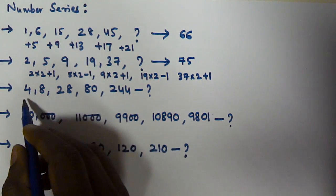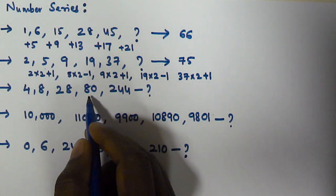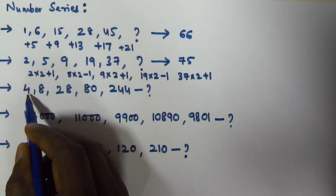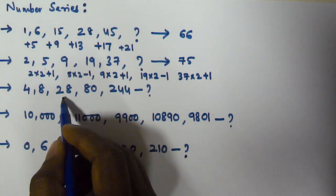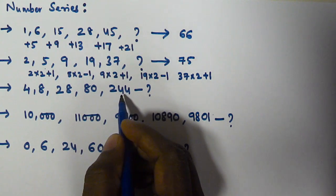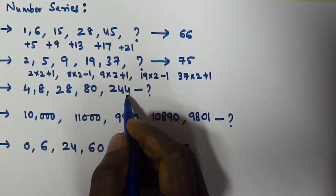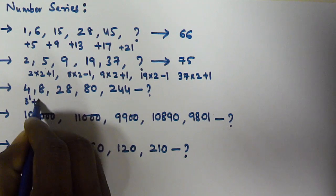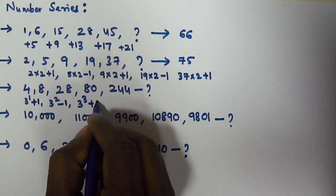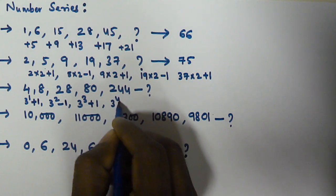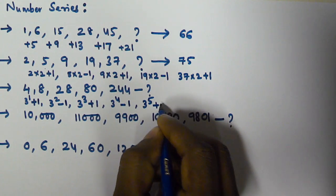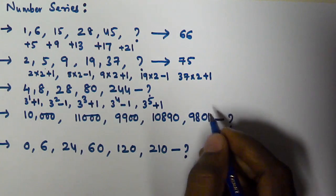For the third series, 4, 8, 28, 80, 244, observe that 3¹=3 (near 4), 3²=9 (near 8), 3³=27 (near 28), 3⁴=81 (near 80), 3⁵=243 (near 244). The pattern is 3^n alternately plus 1 or minus 1: 3¹+1=4, 3²−1=8, 3³+1=28, 3⁴−1=80, 3⁵+1=244.